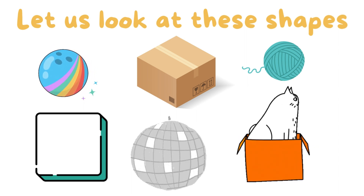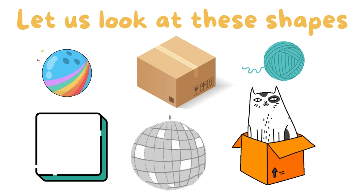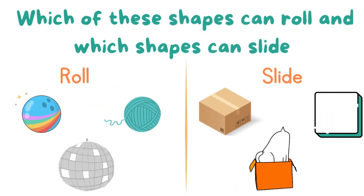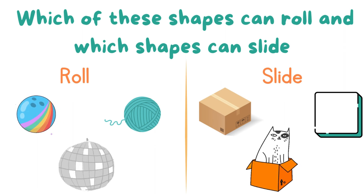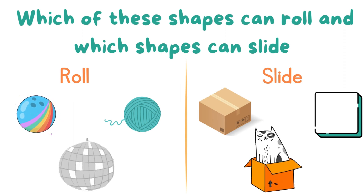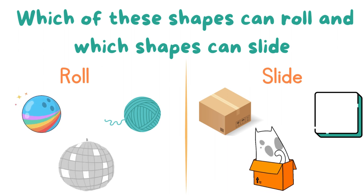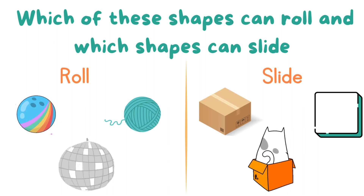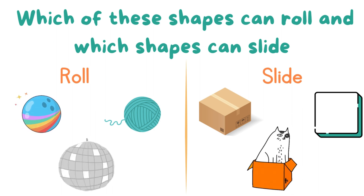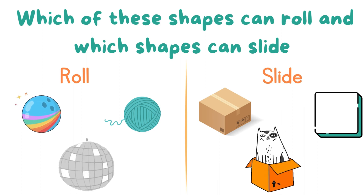Let us look at these shapes. Which of these shapes can roll and which shapes can slide? The bowling ball can roll. The ball of yarn can roll. The disco ball can roll. The delivery box can slide. The text box can slide. The cat in the box can slide.